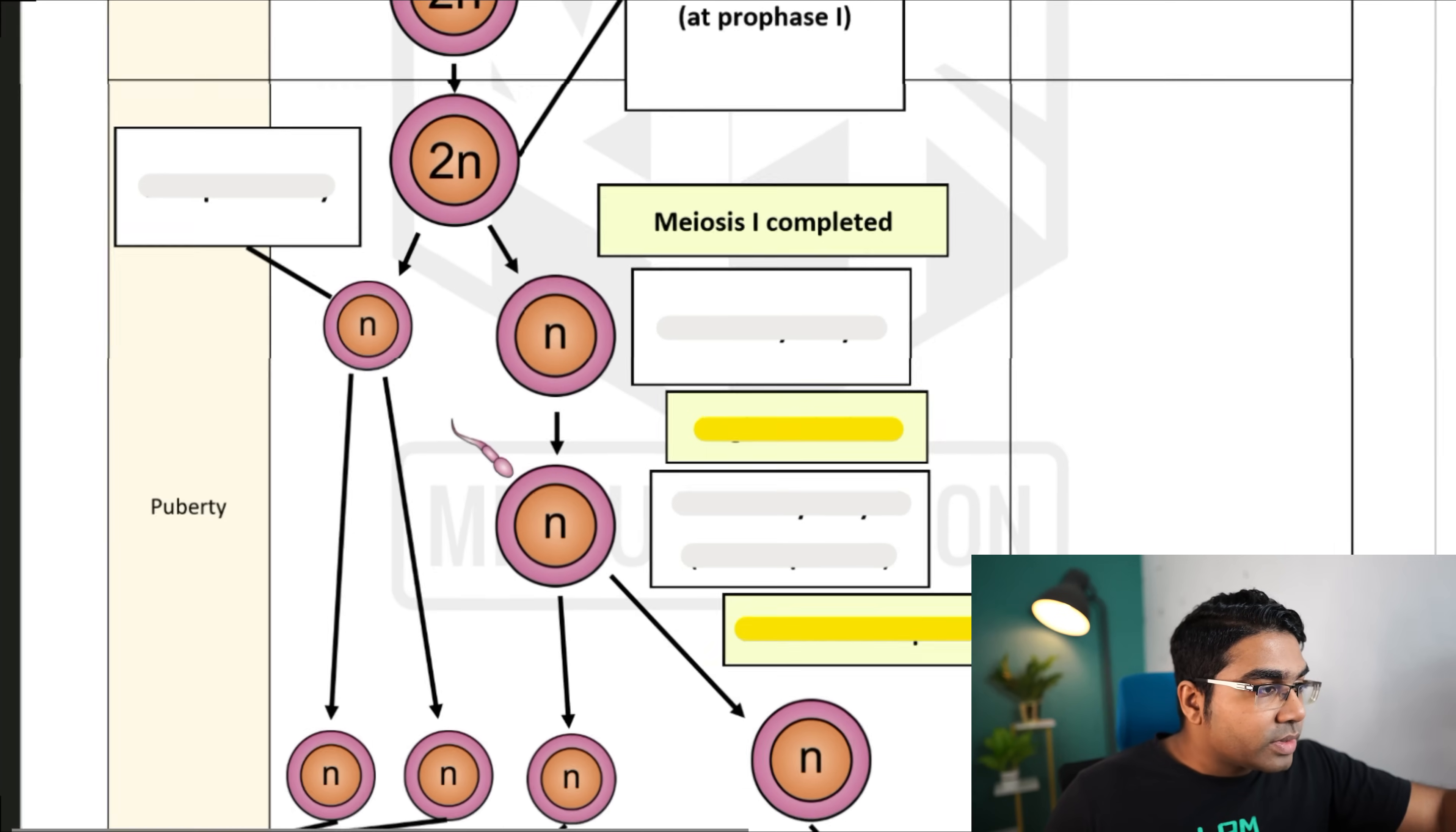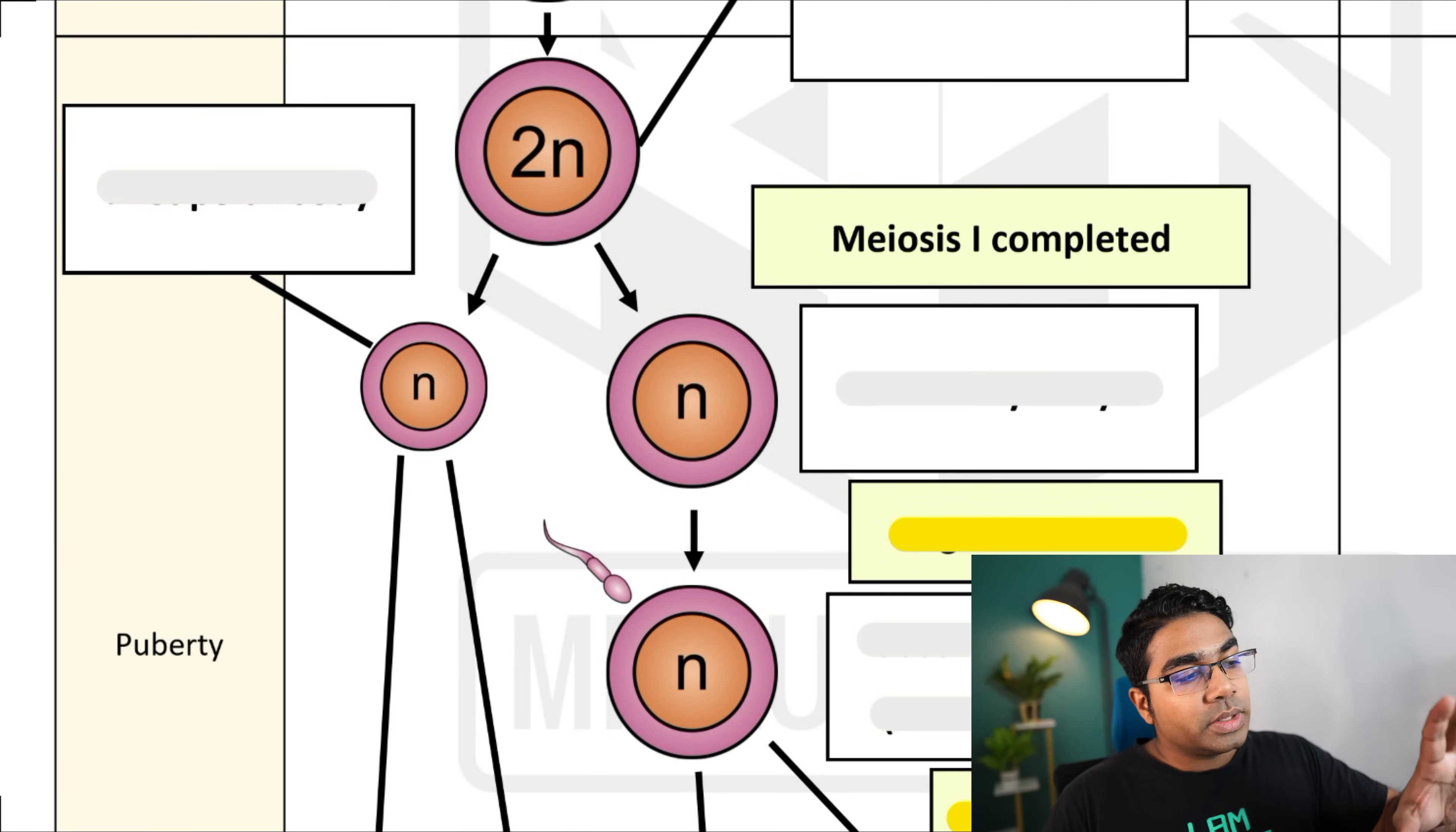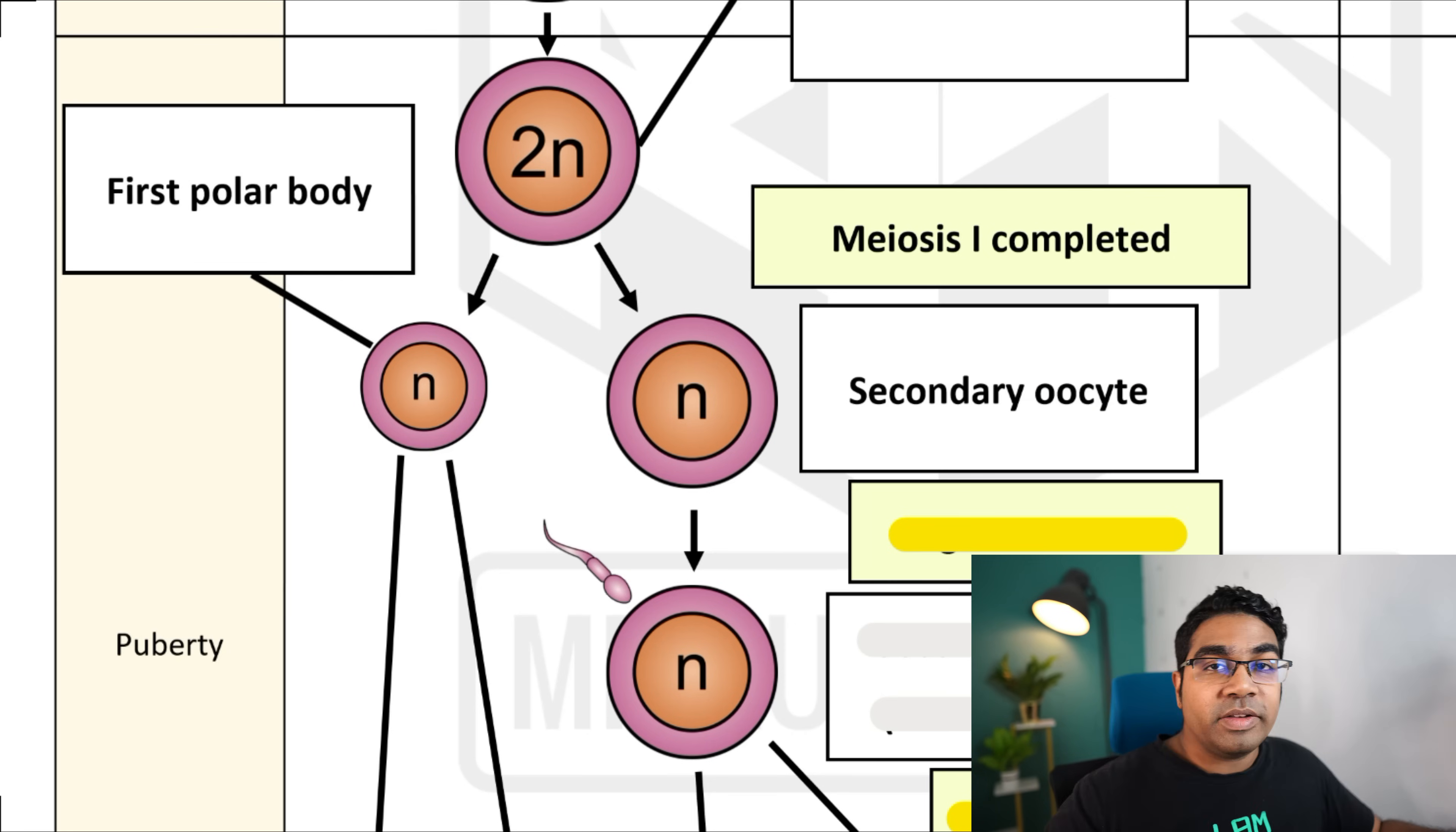When we look closely at the two haploid cells formed here, one is much larger than the other. One contains a lot more cytoplasm than the other. The small cell is known as the first polar body. The larger cell is known as the secondary oocyte. So the primary oocyte has now formed the secondary oocyte.